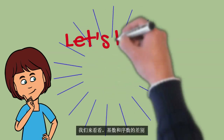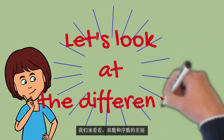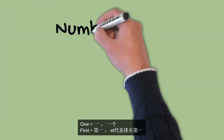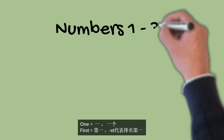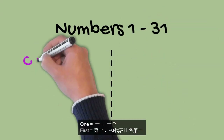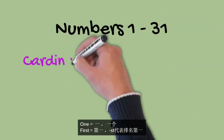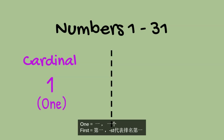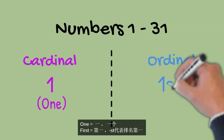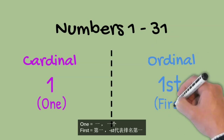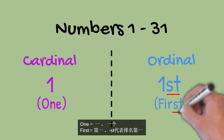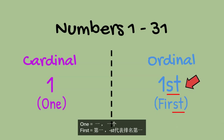Let's look at the differences between the numbers. From 1 to 31, the cardinal number 1 is called 1. The ordinal number is called 1st. The suffixes are put at the end of the number in order to tell the position.